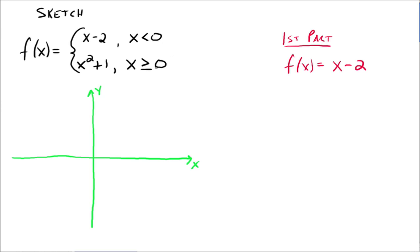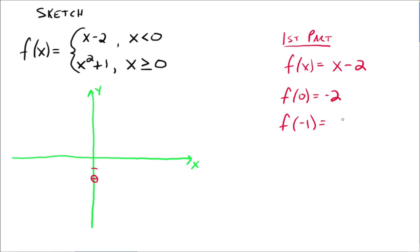We're going to figure out what the value of this first part is when x is equal to 0, even though we're not allowed to use it. If f of x is x minus 2, then f of 0 would be negative 2 — that's the ordered pair 0, negative 2. Since we're not allowed to use 0 for this first part, this point has to be an open circle, meaning that ordered pair is not included. For example, f of negative 1 would be negative 1 minus 2, which is negative 3 — the ordered pair negative 1, negative 3.